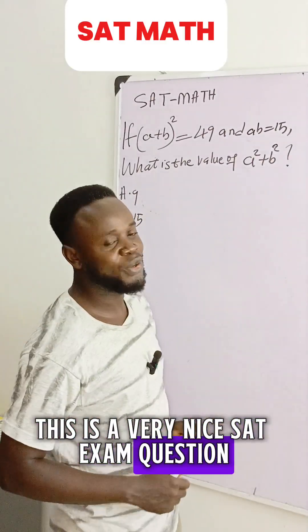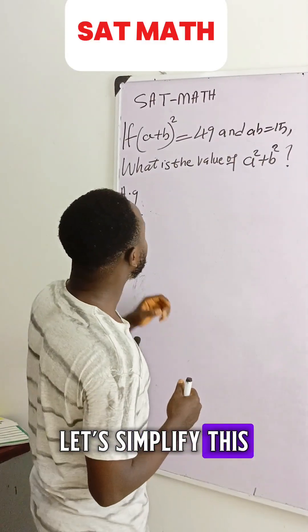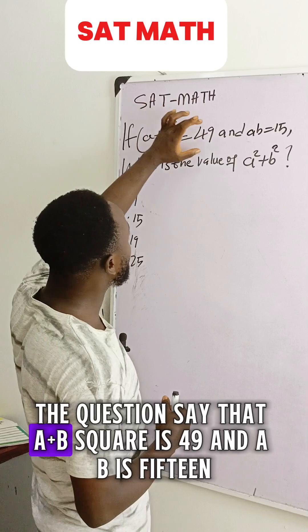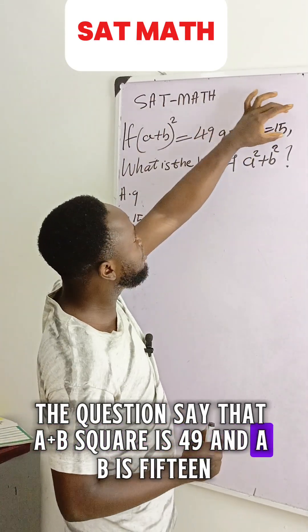This is a very nice SAT example. Let's simplify this. The question says that (a+b) squared is 49 and ab is 15.